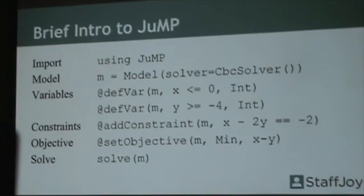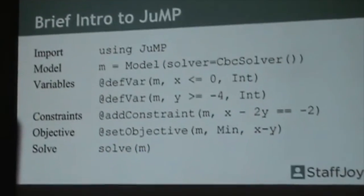Then constraints are very straightforward to add. Here we're adding a constraint that x minus 2y has to equal negative 2. Then setting the objective is also straightforward. At the end, you basically call solve.